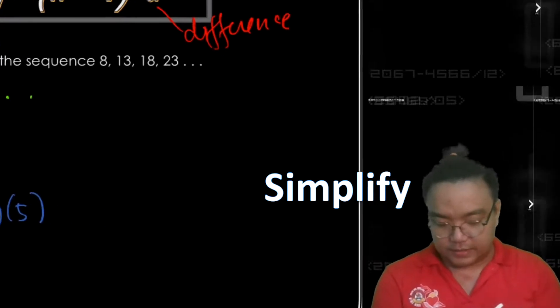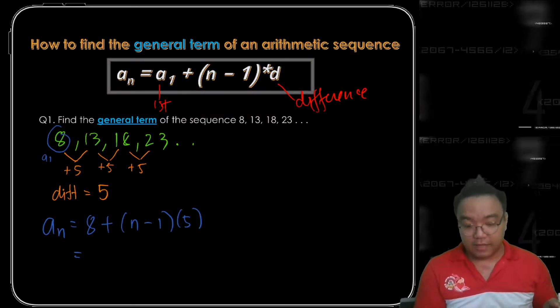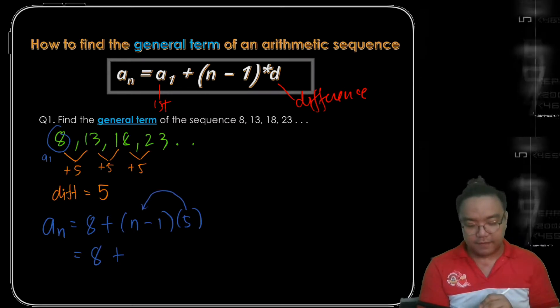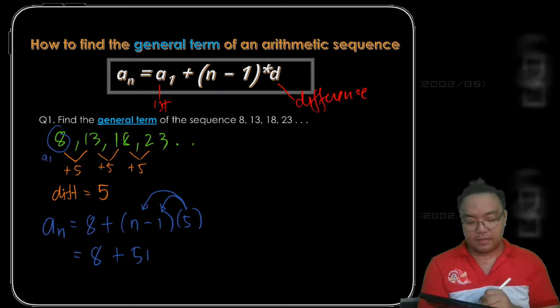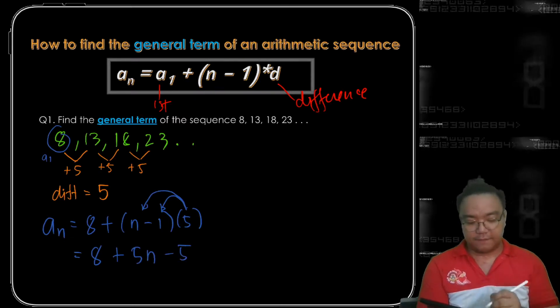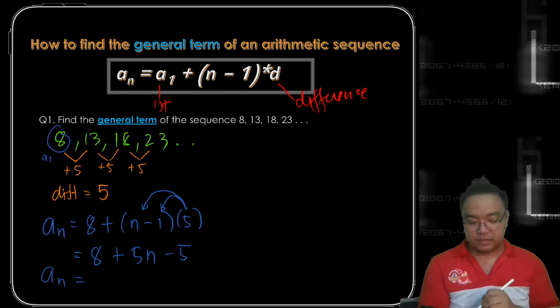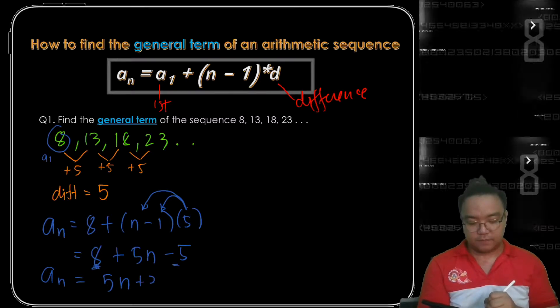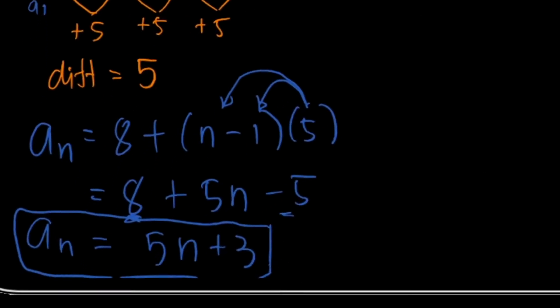Simplifying the right side, we have 8 plus — don't forget to distribute the 5 to (n minus 1) — so 5 times n gives us 5n, and 5 times negative 1 is negative 5. Combining like terms gives us 5n, and then 8 minus 5 gives us positive 3. So the general term for this arithmetic sequence is 5n plus 3.